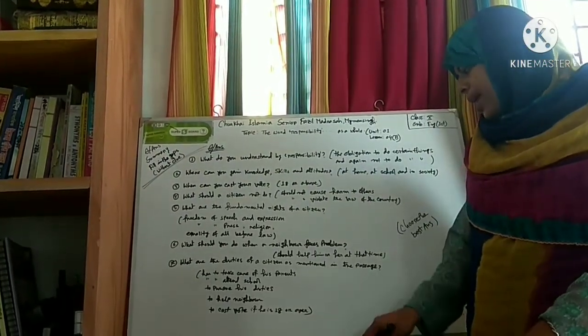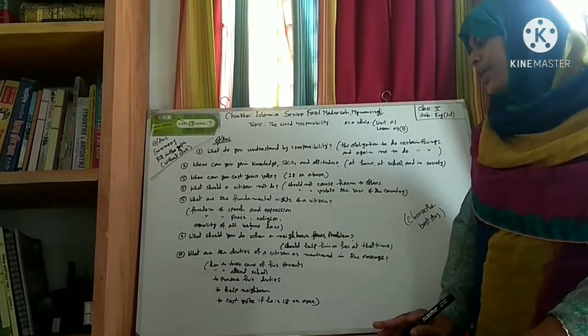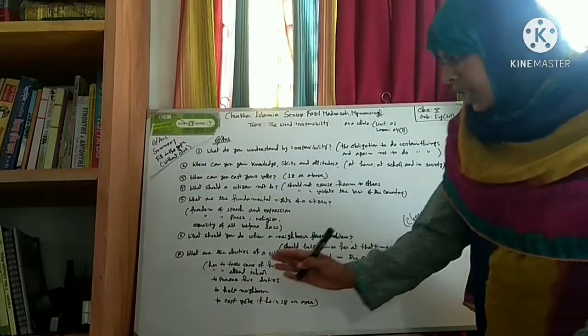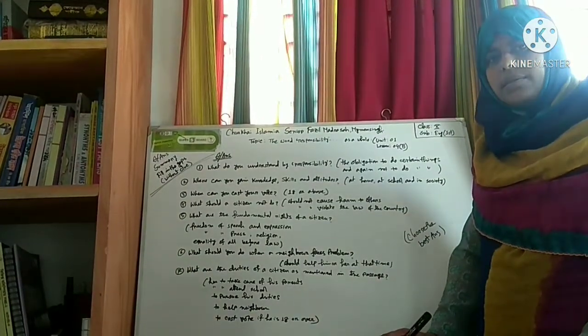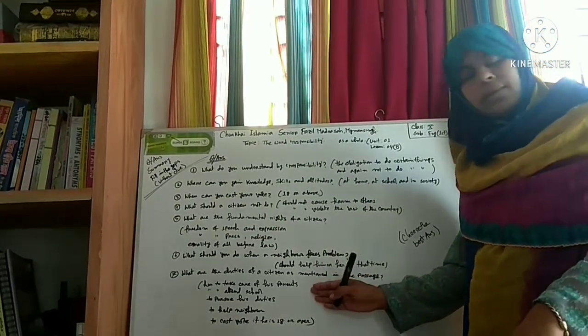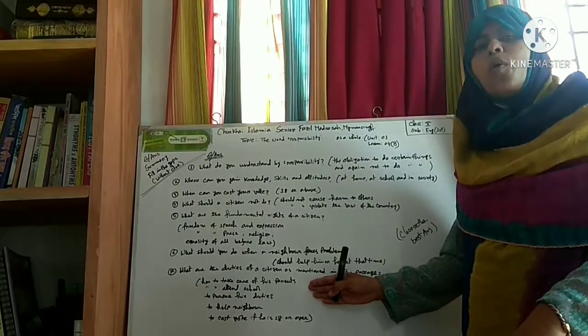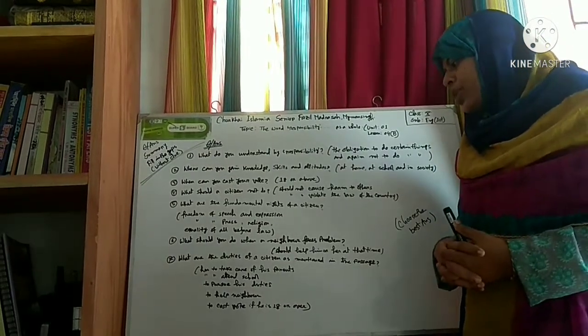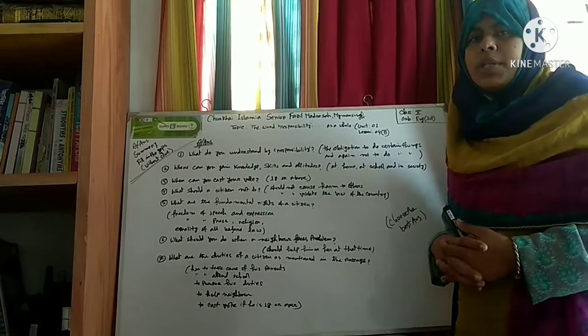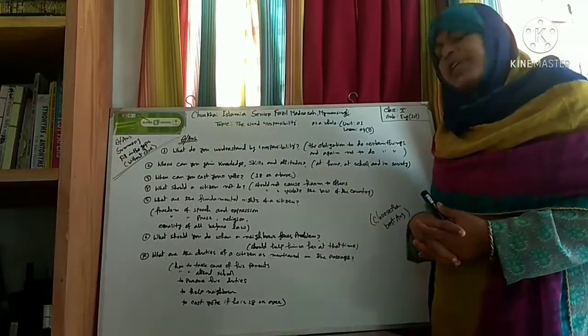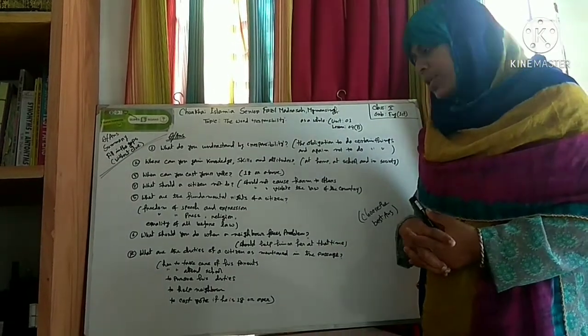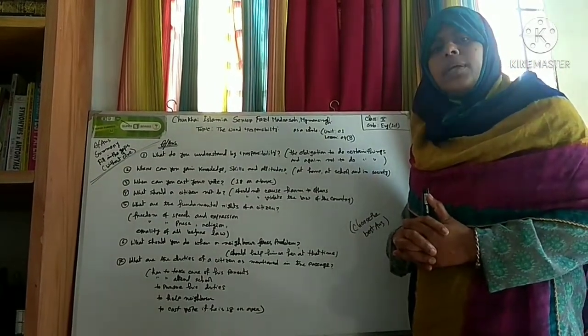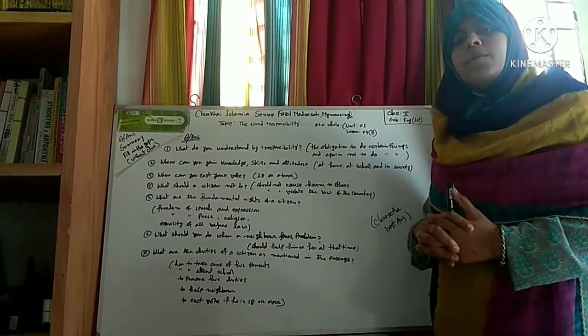What are the duties of a citizen as mentioned in the passage? A citizen has to take care of his parents when they are in old age. He has to attend school. He has to pursue his duties. He has to help neighbors. And last, he has to cast vote if he is 18 or over. So I will be teaching you.